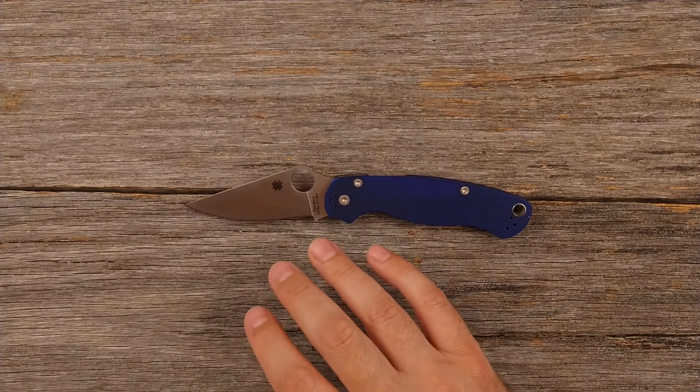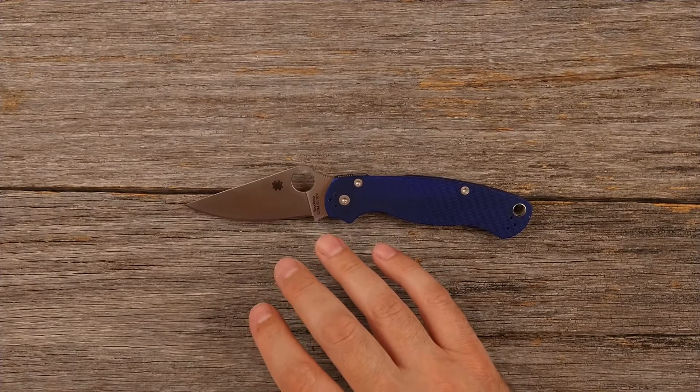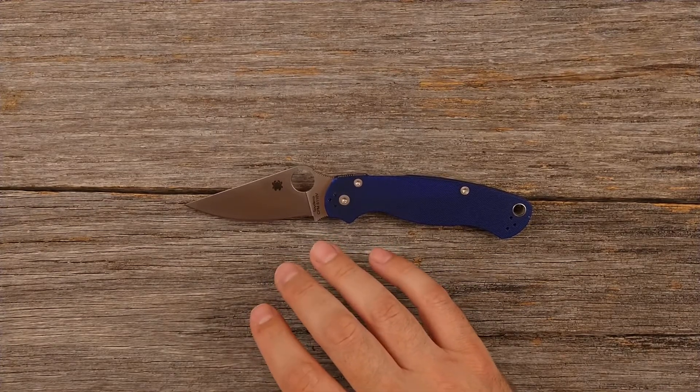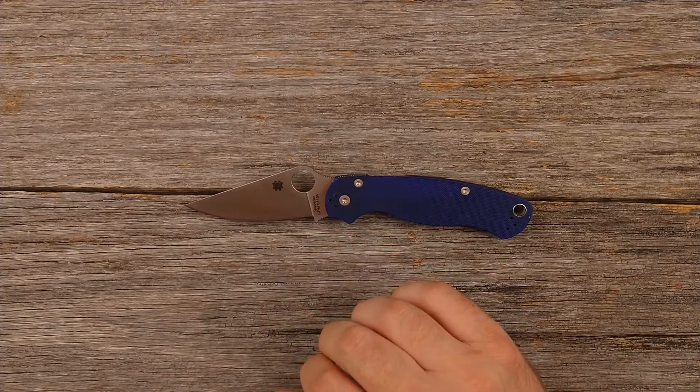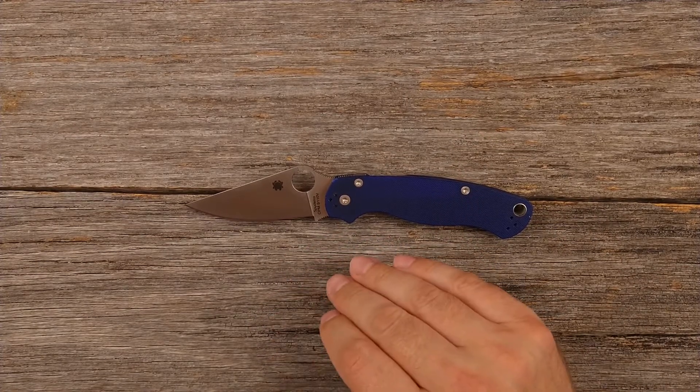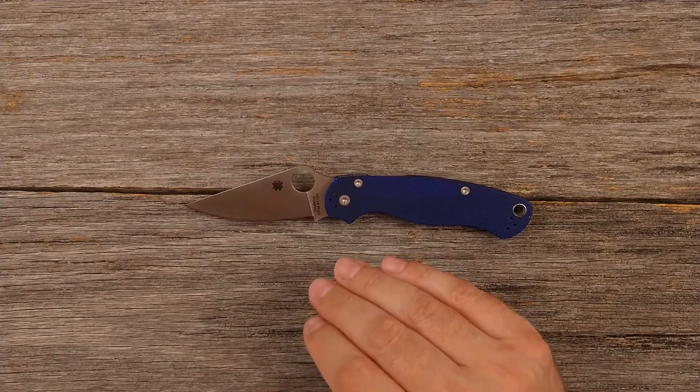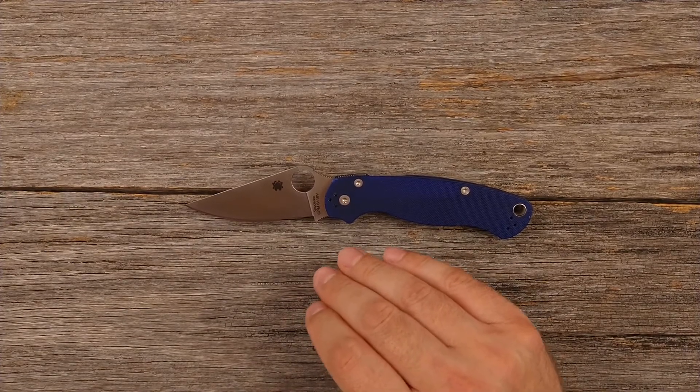I cut so much cardboard. I was trying to cut it until it got difficult to cut, until the blade's dulled enough that it would not cut the cardboard easily. And I did so much cutting that I actually had blisters on my hands. My hands were given out before the knives were, and that was all three of them. They all held up so well. And that Ontario Rat One impressed me to no end how well it hung in with these higher end steels.